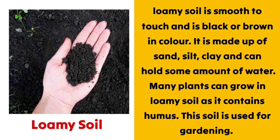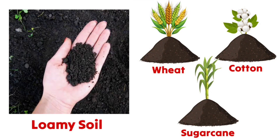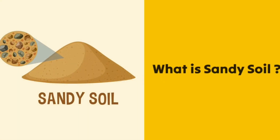Loamy soil is smooth to touch and is black or brown in color. It is made up of sand, silt, and clay, and can hold some amount of water. Many plants can grow in loamy soil as it contains humus. It is also used for gardening, and plants such as wheat, cotton, and sugarcane grow well in loamy soil.